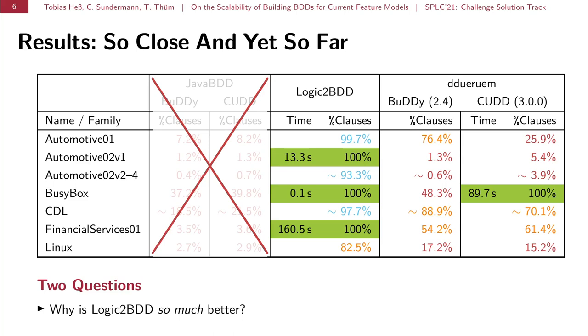The first question is answered quickly. Logic2BDD does not use the DIMACS format, but uses an XML-based format. So, it has more information on the feature model, for example, the structure and also XOR groups, and it uses them to its advantage and is capable of being much more efficient when constructing a BDD.